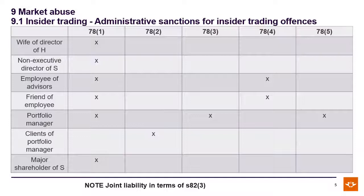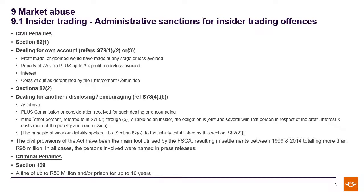So this is your thought process: here are the offenses, here is everyone who committed an offense. You then go to each one and decide if there is a defense available. Then we look at the sanctions. Those guilty of section 78.1, 2, or 3 will face profit or loss penalties, interest, and cost of suits. Those guilty of section 78.4 and 78.5 will also have the commission added as well.